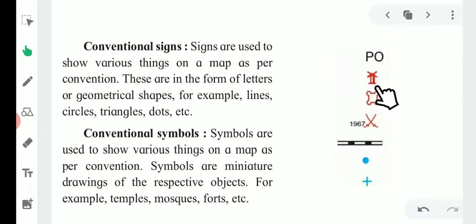Here is an example of fort. This is a symbol of fort you can use on the map. Different types of signs and symbols are fixed and standard and they are used on a map universally.